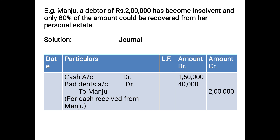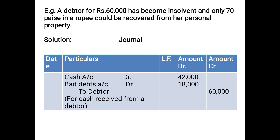Another example: a debtor of Rs. 60,000 became insolvent; 70% could be recovered from personal property. 70% of Rs. 60,000 = Rs. 42,000 received; remaining 30% = Rs. 18,000 could not be recovered. Since it is insolvency — not full settlement — it is bad debts, not discount allowed. Entry: Cash Account debited Rs. 42,000; Bad Debts Account debited Rs. 18,000; to Debtor Rs. 60,000. Narration: for cash received from a debtor.